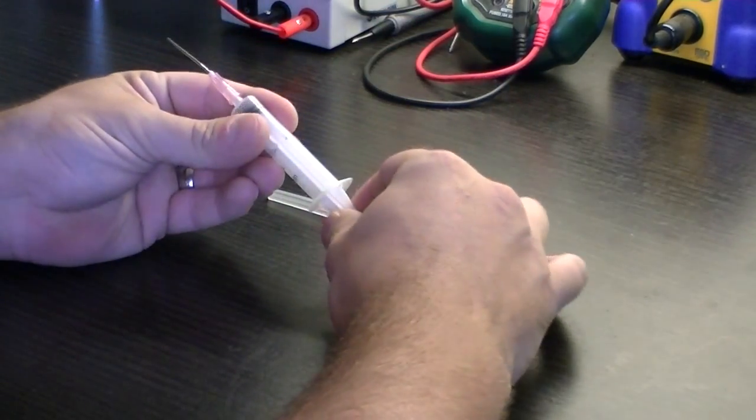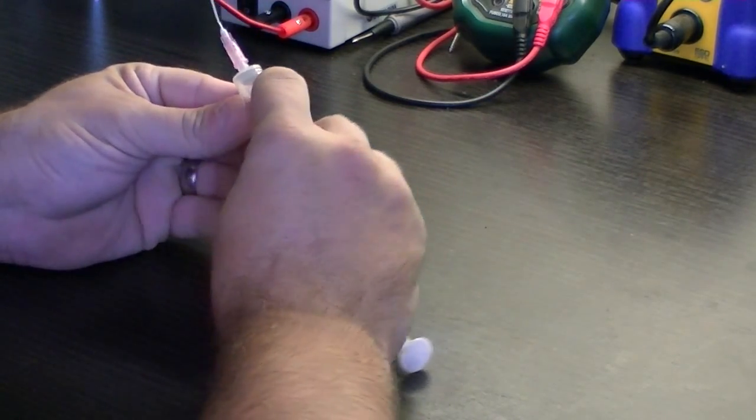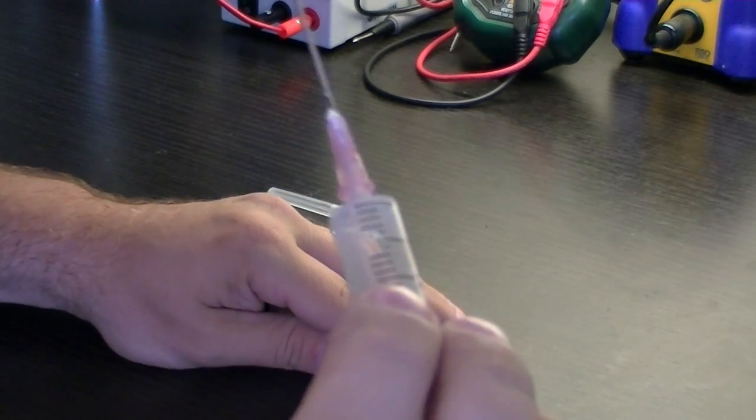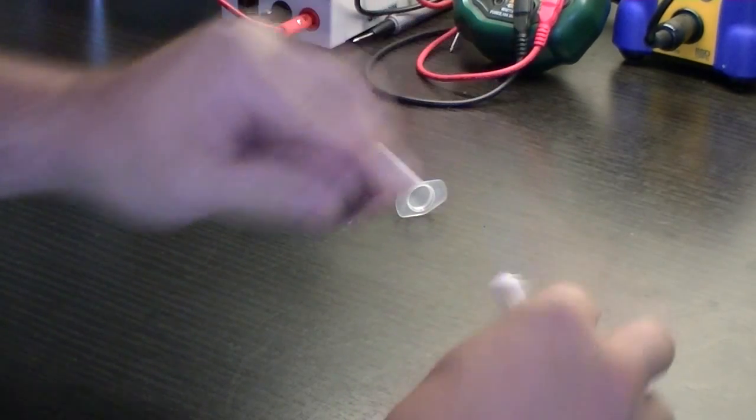All you have to do is pull the plunger out, drill yourself a small hole, then take the plunger apart, take the black piece off.